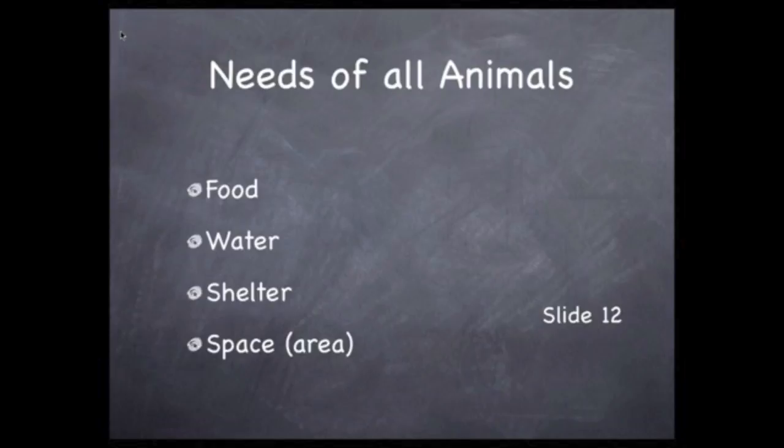An example is a polar bear. Their main food is a seal, and they need large sheets of floating ice because of the way they hunt seals. Their habitat must have all these elements so they can get the food they need to survive.